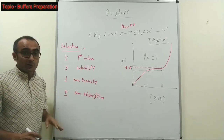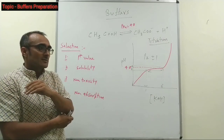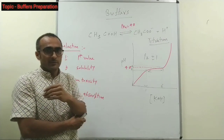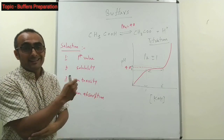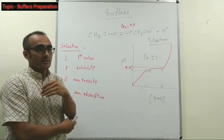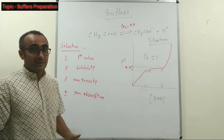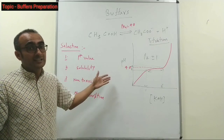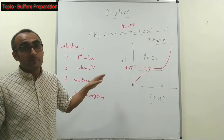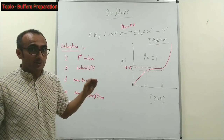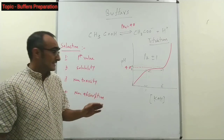The second point is solubility — your buffer should be very soluble. Sometimes, for example, if you are preparing phosphate buffer and you are adding divalent or multivalent cations such as calcium ions, the calcium ion and phosphate buffer together will precipitate — solubility will not be there. So this point must be remembered: your compound and mixture of compounds in the buffer should be well soluble in order to function as a buffer.